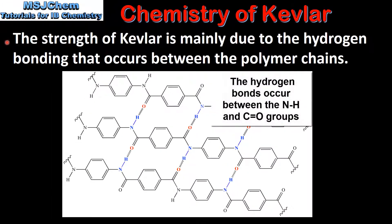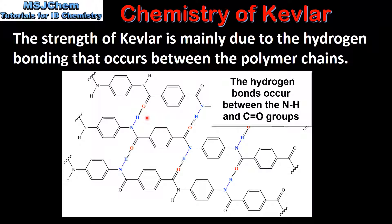The strength of Kevlar is mainly due to the hydrogen bonding that occurs between the polymer chains. Here we can see the hydrogen bonding that occurs between the oxygen atom and the hydrogen atom. This hydrogen bonding, together with the highly ordered structure of the polymer chains, gives Kevlar its strength.